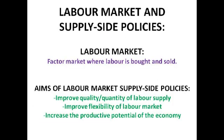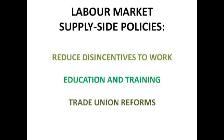There are two major markets to consider when looking at supply side policies: the labour market and the product market. The labour market is essentially the factor market where labour is bought and sold. The three main aims of labour market supply side policies are to improve the quality and quantity of the labour supply, to improve the flexibility of the labour market, and to increase the productive potential of the economy.